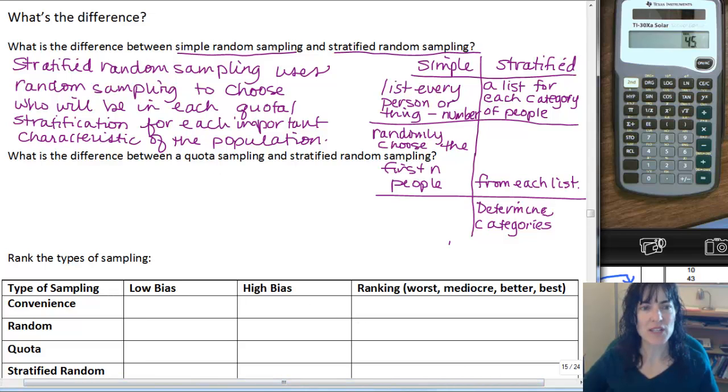And that brings us to the next one, what's the difference between a quota sample and a stratified random sample? The big difference is that when you actually go to create the samples, you create all your stratas or your quotas in the same manner, whether it's quota sampling or stratified random sampling.